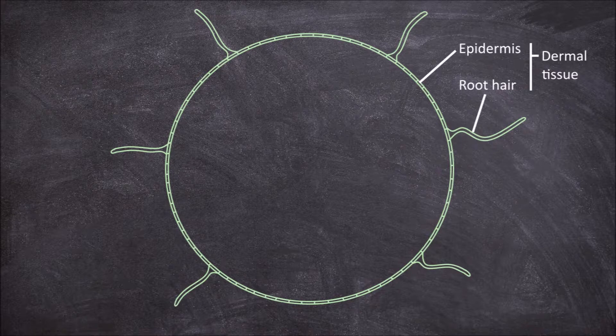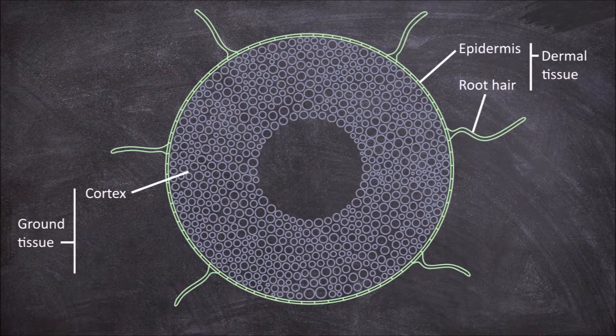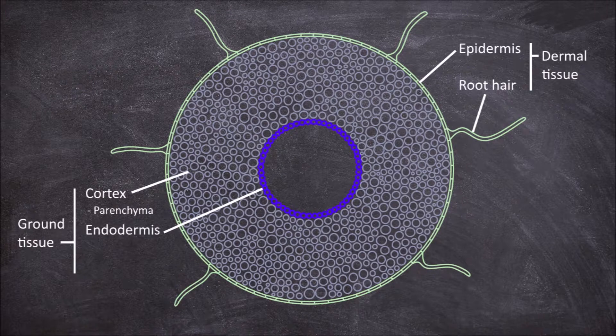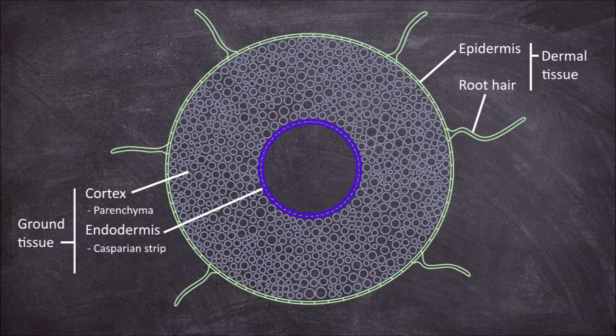In from this layer you will find the ground tissue. The ground tissue consists of the cortex, which is filled with parenchyma cells. The innermost layer of the cortex is called the endodermis. The cells of the endodermis are thickened along their radial axis, creating what is called the Casparian strip or band.